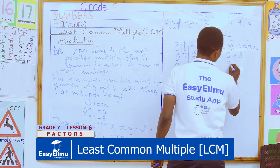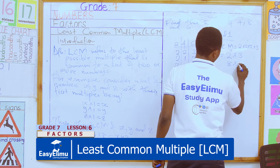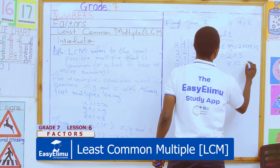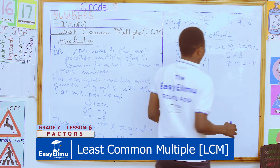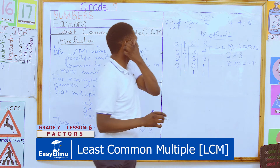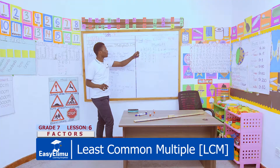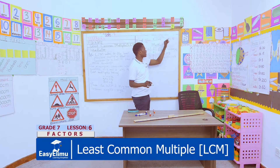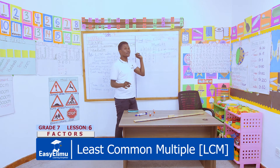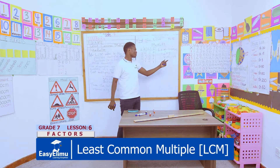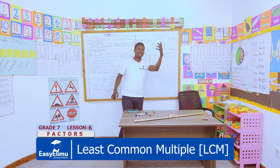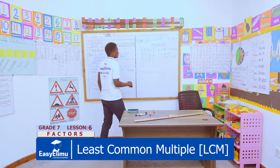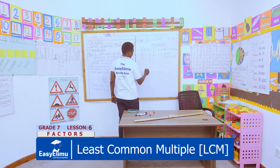Our LCM becomes 2 times 2 times 2 times 3, which is 2 raised to the power of 3 times 3. That is 8 times 3, giving us 24. So if you were to list all the possible multiples of 6, 4, and 8, you would find that 24 is the least common multiple.